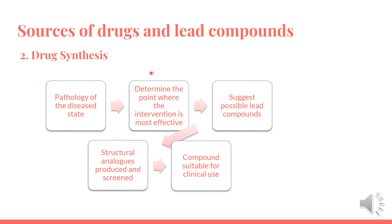Another source of potential drugs and lead compounds is drug synthesis. The most popular approach to drug design by synthesis is to start with the pathology of the diseased state and determine the point where intervention is most likely to be effective. This enables the medicinal chemist to suggest possible lead compounds. These compounds are synthesized so that their pharmacological action may be evaluated. Once a suitably active lead is found, structural analogues of that lead are produced and screened in the hope that this procedure will eventually produce a compound that is suitable for clinical use.